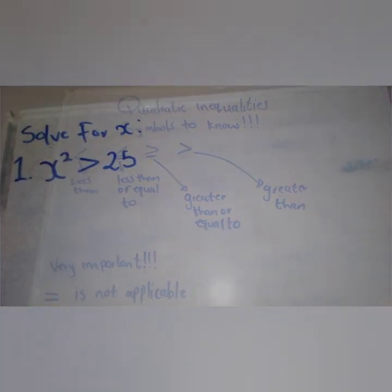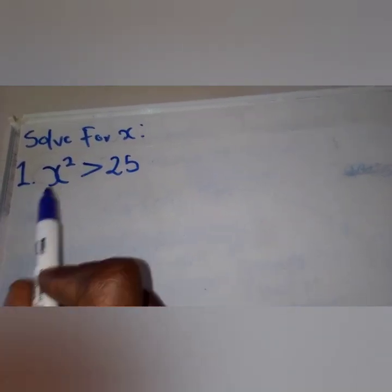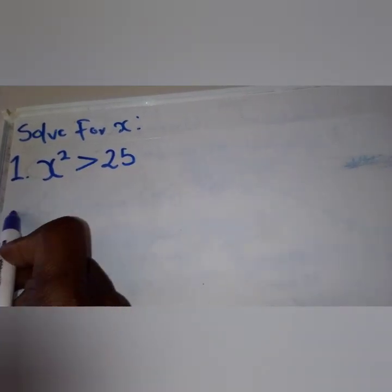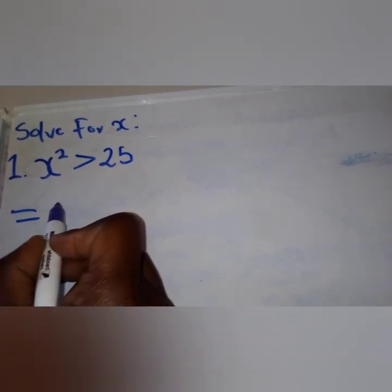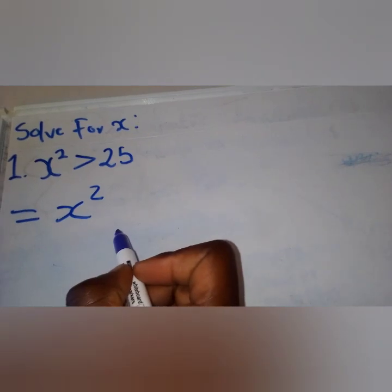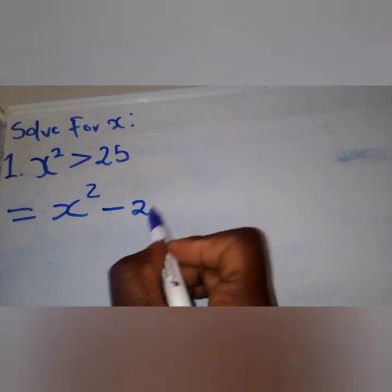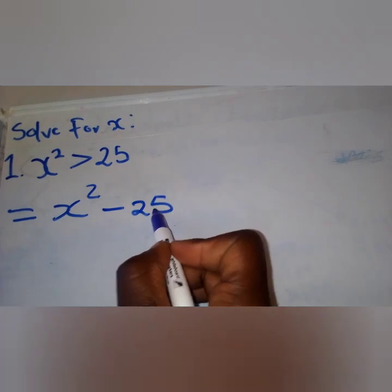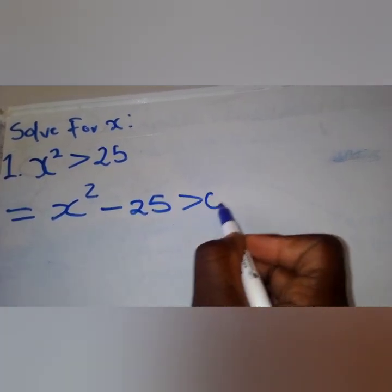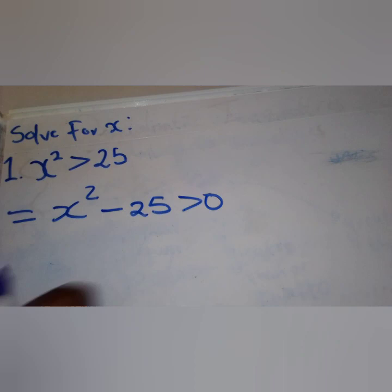We have x squared greater than 25, and we are solving for x. Let's check that everything is in standard form — you can see it is not, so we need to make it standard. We transpose 25 to the other side, changing its sign, giving us x squared minus 25 greater than zero. Now everything is in standard form.